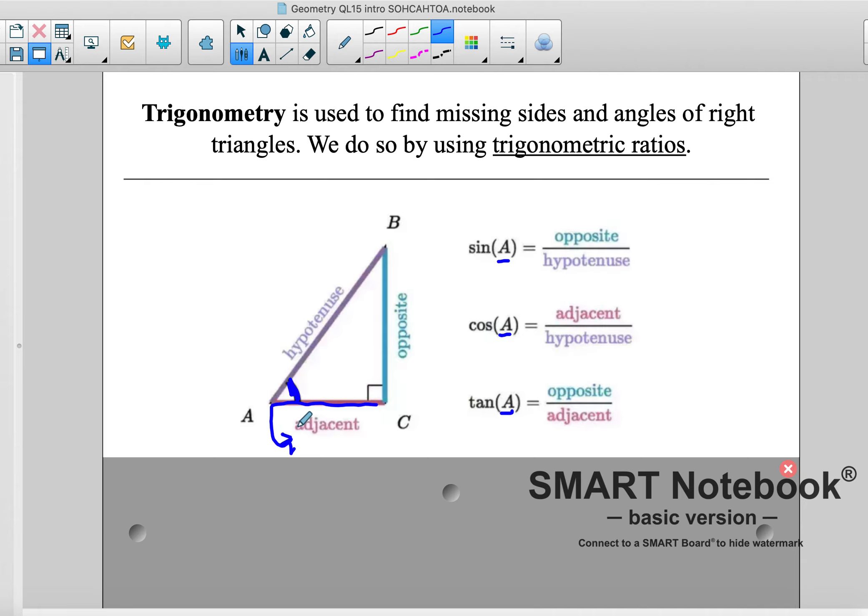Then we've got opposite. BC is opposite my reference angle A. And then finally, the hypotenuse is always opposite the right angle. So that line is never going to change. That side is never going to change. It's always going to be the hypotenuse. It'll always be the longest side. It will always be opposite the hypotenuse.